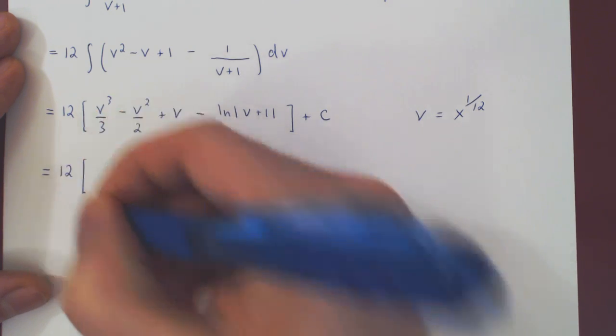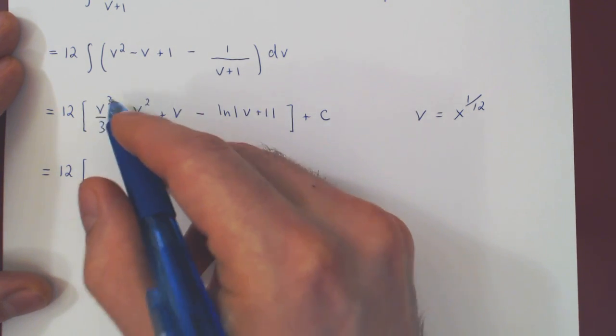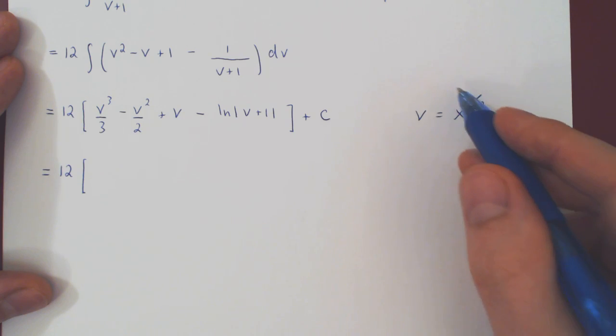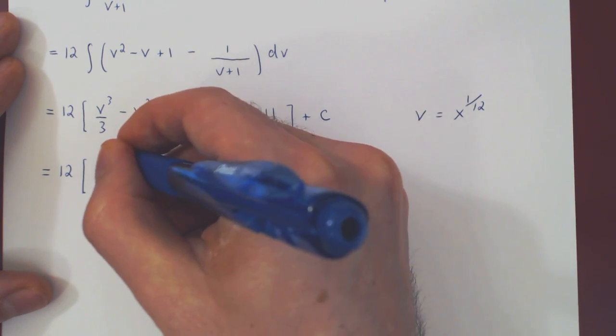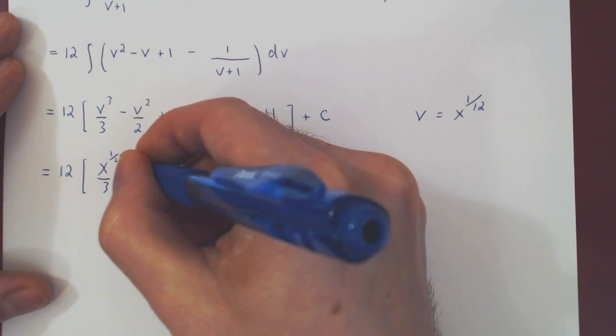So 12 times, well, if you cube v, you get 3 over 12, which is a quarter. So x to the 1 over 4 over 3 minus, if you square v, you get 2 over 12, which is 1 over 6.